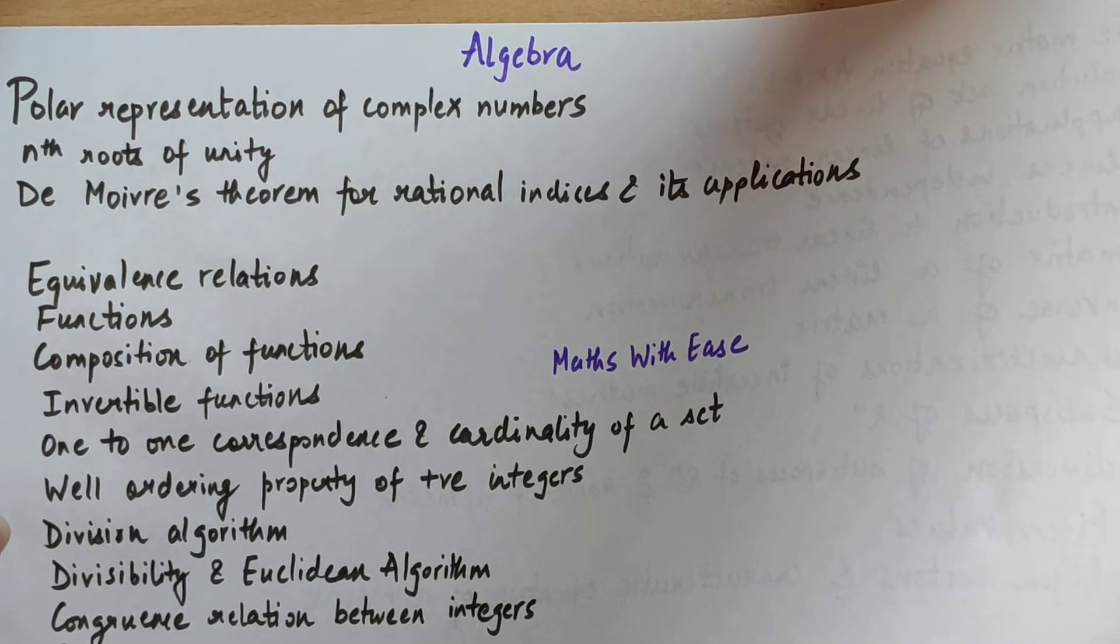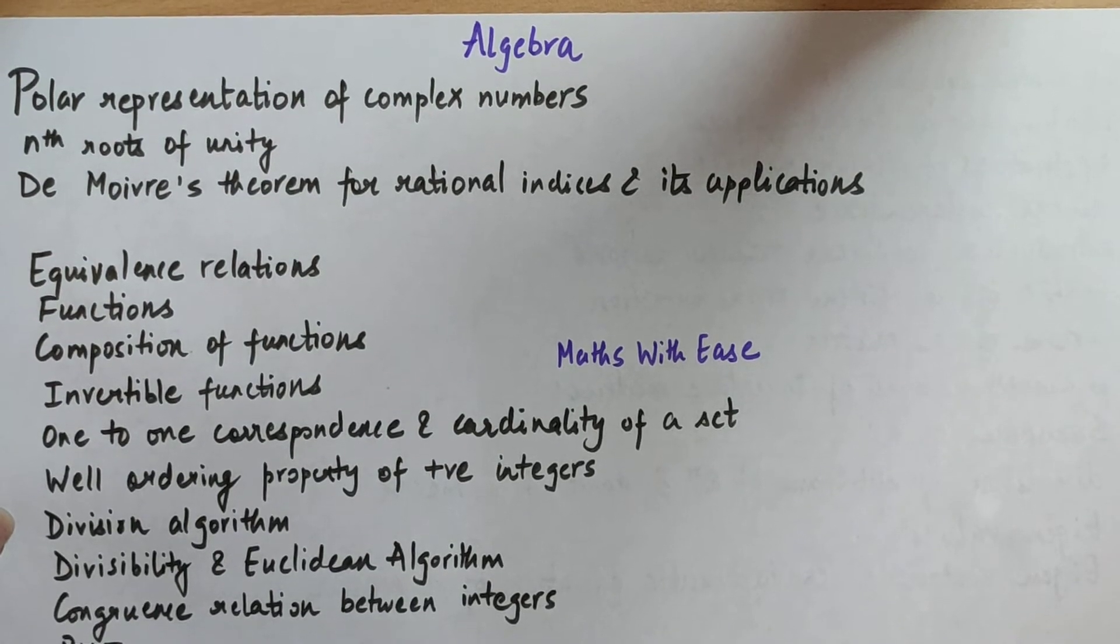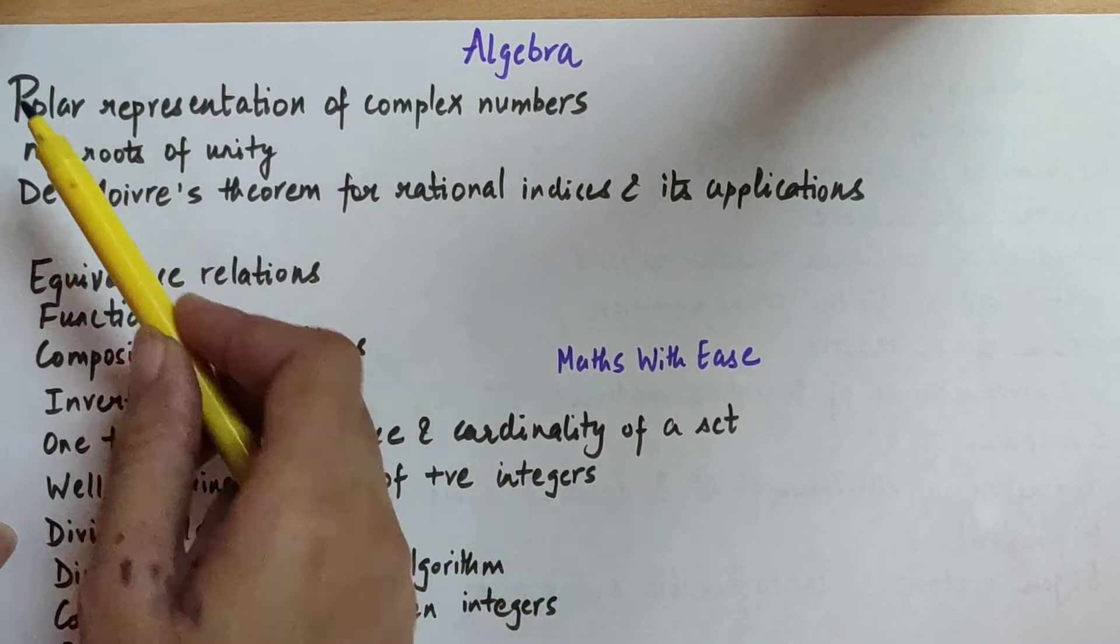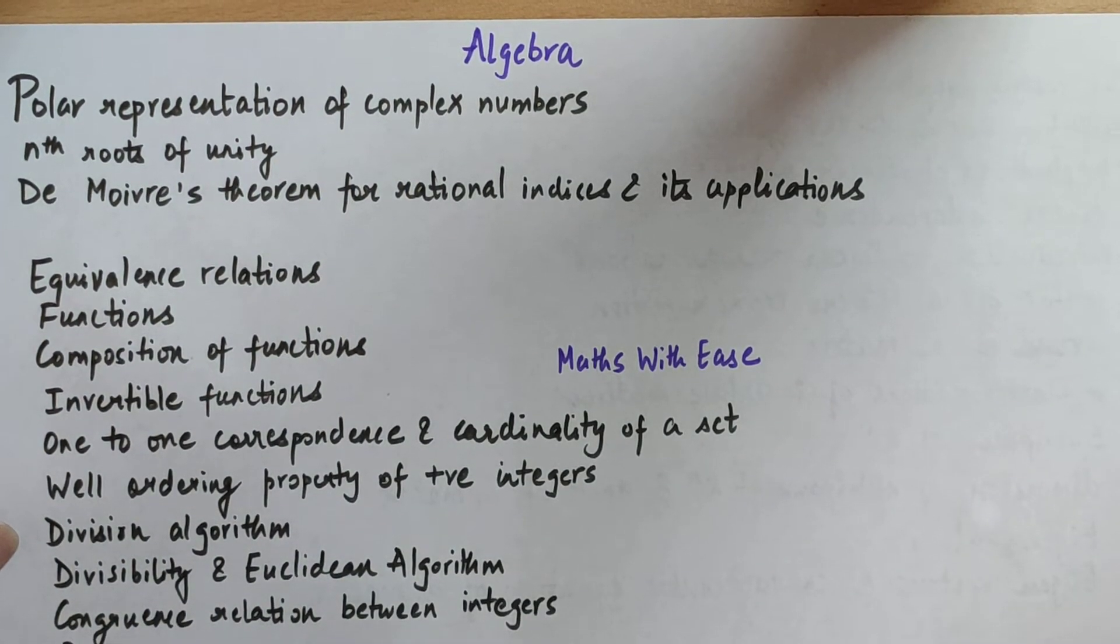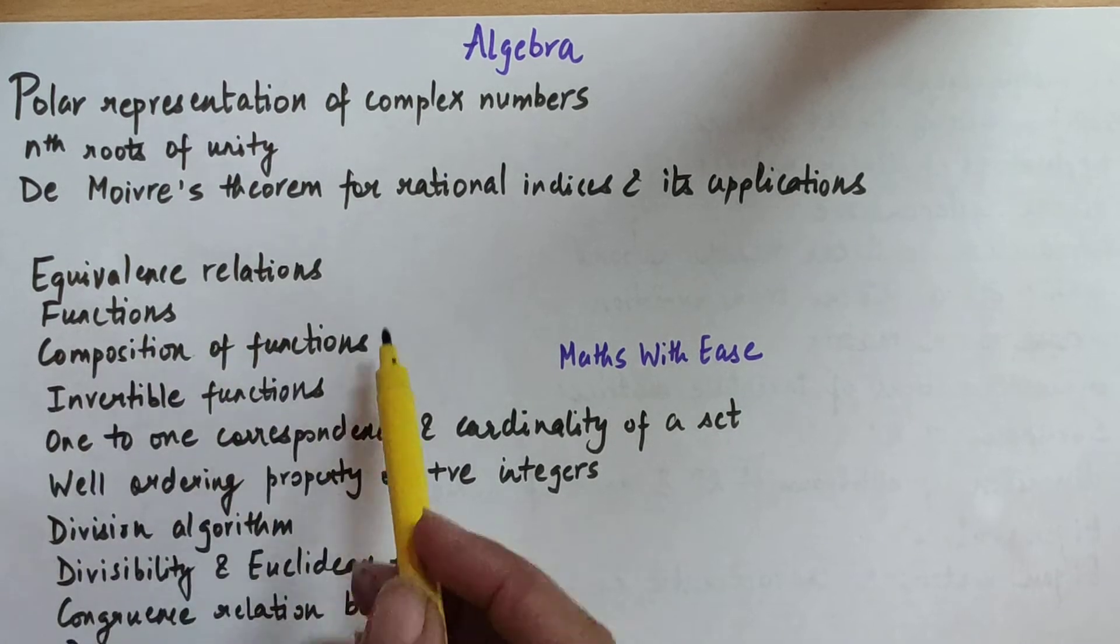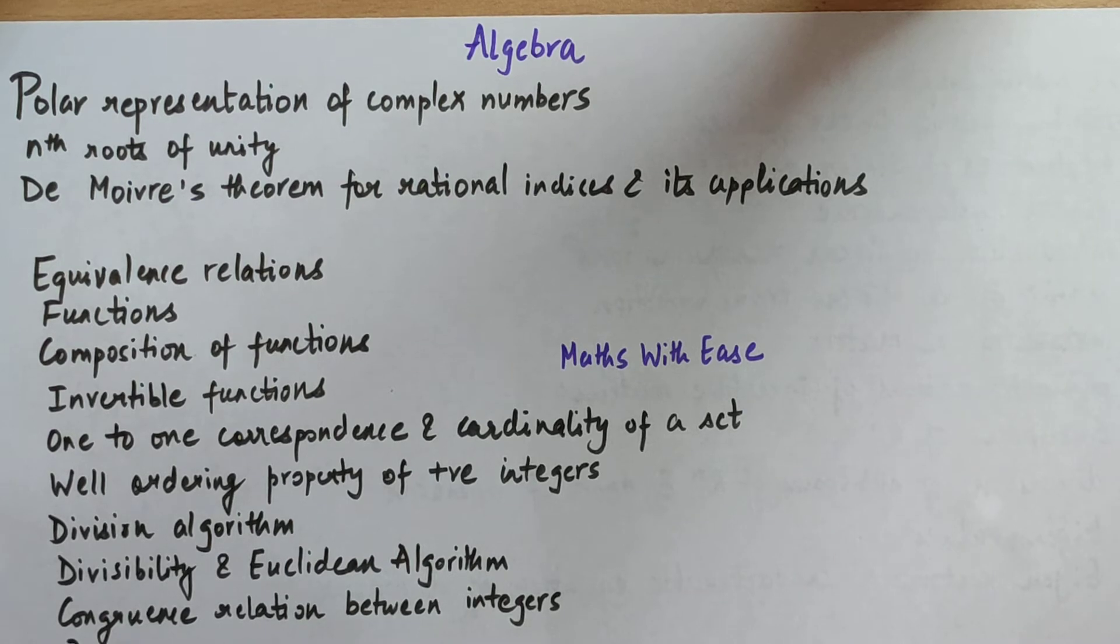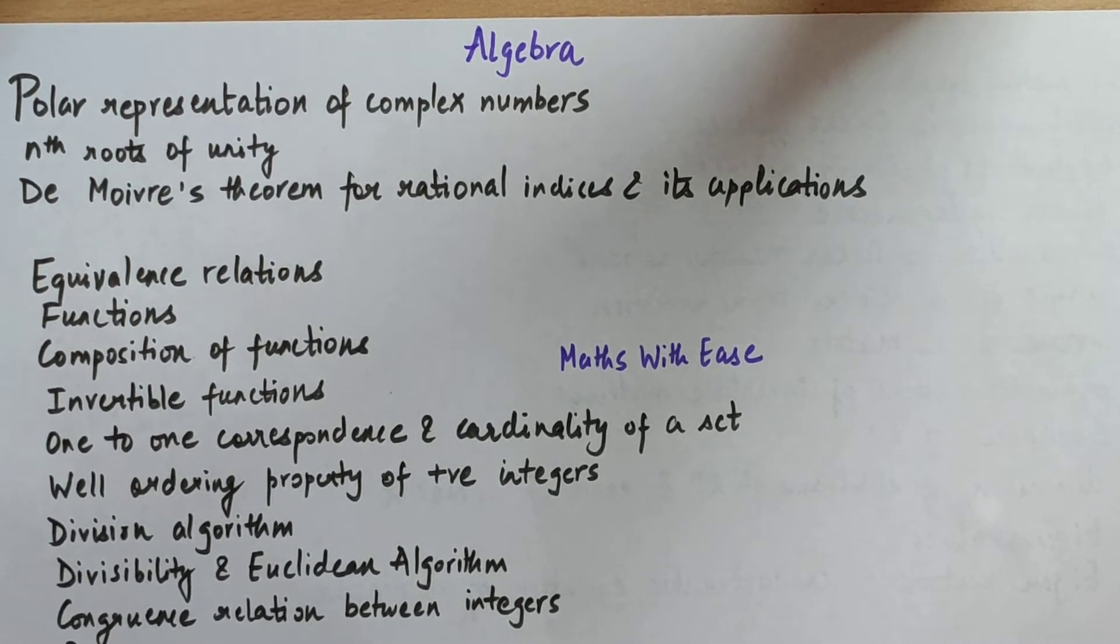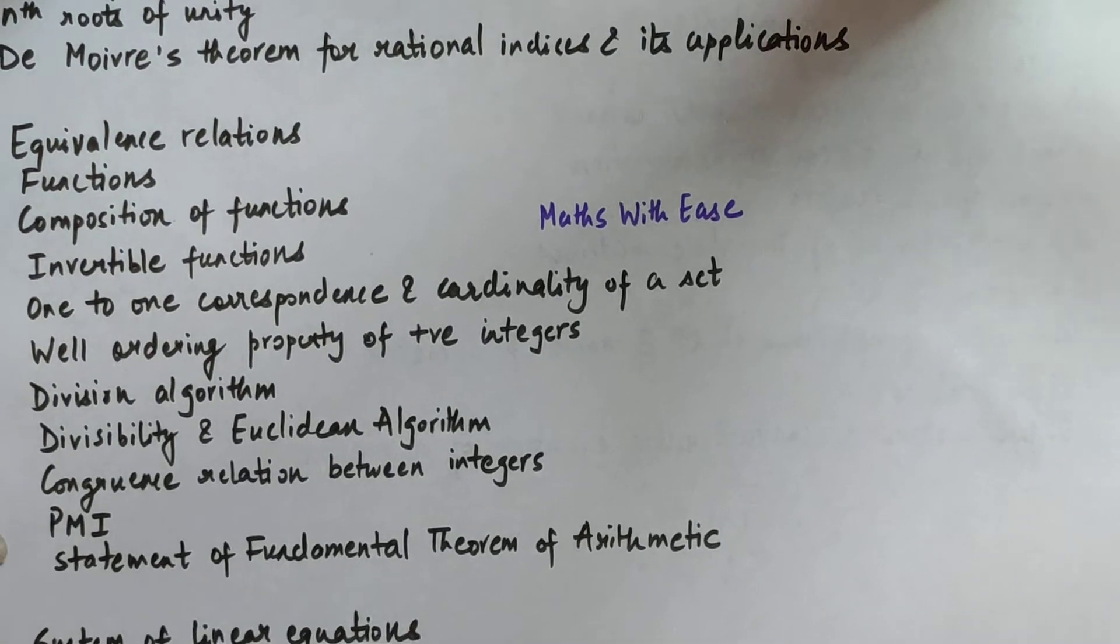Now let's move on to Algebra. Here it is. You can first take a screenshot of the syllabus so that I can start reading it out. The first section consists of these topics: polar representation of complex numbers and its roots of unity, De Moivre's theorem for rational indices and its applications. The second section is: equivalence relations, functions, composition of functions, invertible functions, one-to-one correspondence and cardinality of a set, well-ordering property of positive integers, division algorithm, divisibility and Euclidean algorithm, congruence relation between integers, principle of mathematical induction, statement of fundamental theorem of arithmetic.